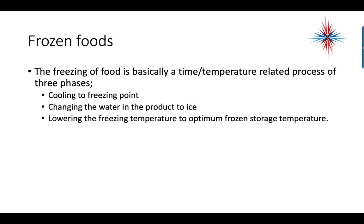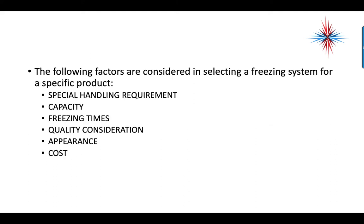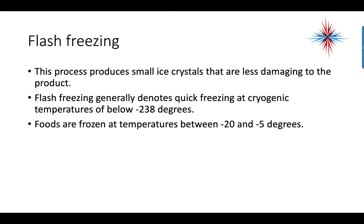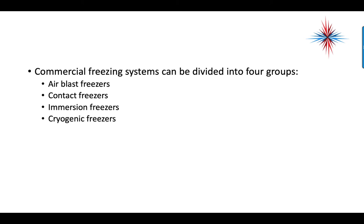Freezing of food is basically a time-temperature related process of three phases: cool it to the freezing point, change the water in the product to ice, and then lower the temperature to optimum frozen storage temperatures. Factors considered in selecting a freezing system include special handling requirements, how much you're freezing, how fast you want it frozen, quality considerations, appearance of the product, and cost. Flash freezing is a process that produces small ice crystals that are less damaging to the product — generally a quick freezing at cryogenic temperatures below negative 238 degrees. Foods are typically frozen at temperatures between negative 20 and negative 5 degrees. Commercial freezing systems can be divided into four groups: air blast freezers, contact freezers, immersion freezers, and cryogenic freezers.